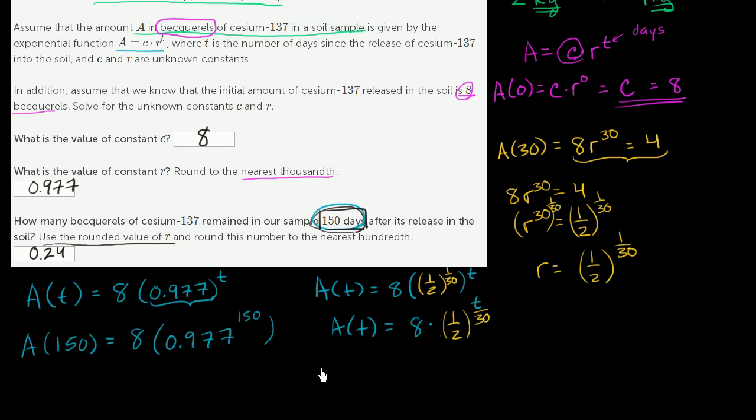So what is A of 150? A of 150 is going to be equal to 8 times 1 half to the 150 over 30, well that's just 5, 1 half to the 5th power. What's 1 half to the 5th power? That is 1 to the 5th over 2 to the 5th, or 1 over 32. So this is 1 over 32, which is equal to 8 over 32, which is equal to 1 over 4, or 0.25.